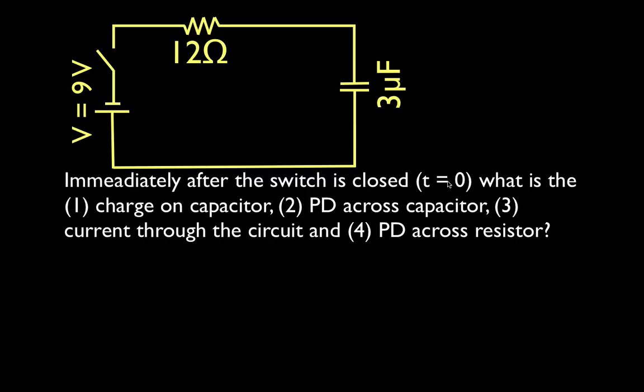Right after the switch is closed, all of the current — the total amount of current, the highest current — is flowing through the circuit and the resistor. But none of this current, no charge, has yet reached or been put onto the capacitor. There is no charge on the capacitor. None of the charge has reached the capacitor, so the charge on the capacitor is zero.